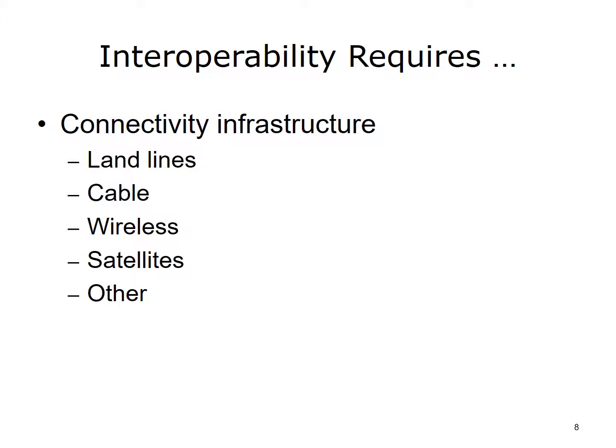In order to communicate, there must be a path for communication. The connectivity infrastructure is an important component for interoperability. In many settings, accomplishing physical connectivity is a challenge. We have many choices: landlines, cable, wireless, satellites, and other technologies. Many factors — including costs, culture, the environment, and what currently exists — influence the selection. Beyond the physical connections, covered in detail in the first unit, there are other requirements and standards that must be used to be interoperable.